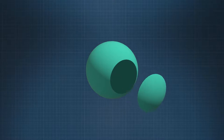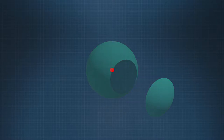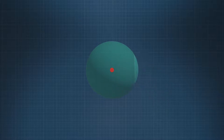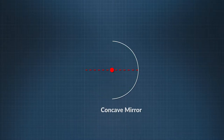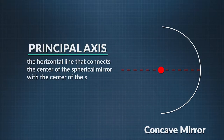Let's talk about how the optics of spherical mirrors work. Let's start with the center of curvature. Think of a spherical mirror as part of a sphere — the center of curvature is the point in the center of the imaginary sphere from which the mirror is cut. The principal axis is a horizontal line that connects the center of the spherical mirror with the center of the imaginary sphere, serving as a reference line for any rays of light that hit the mirror.